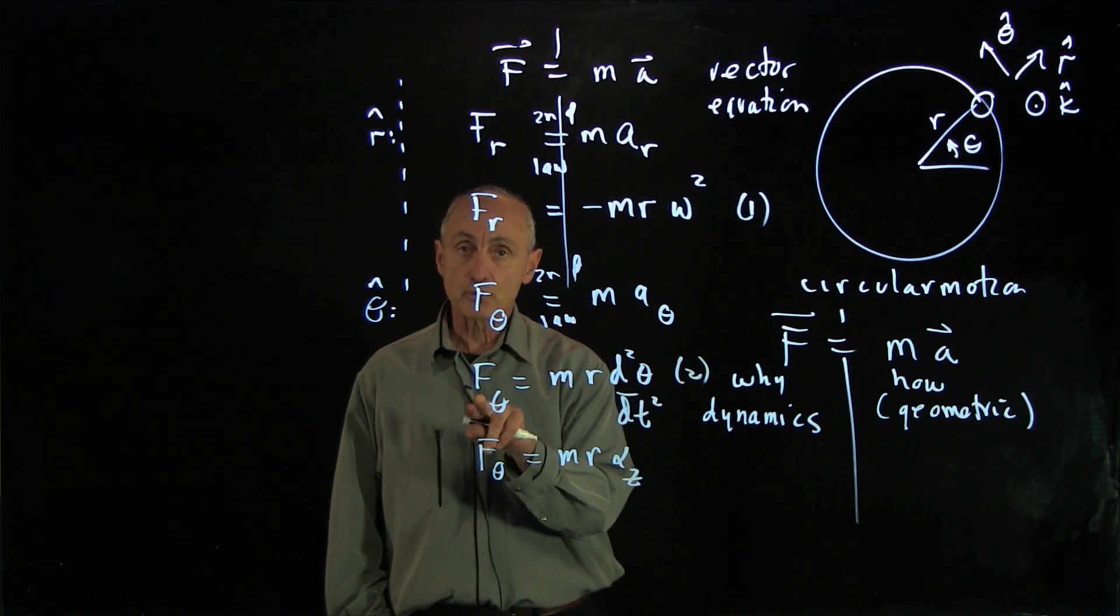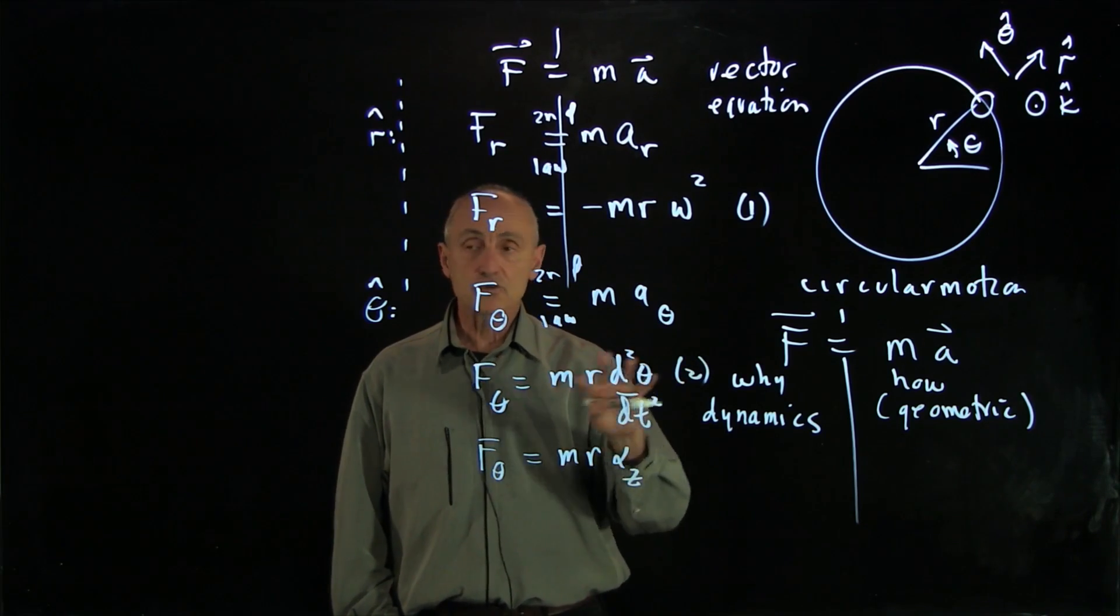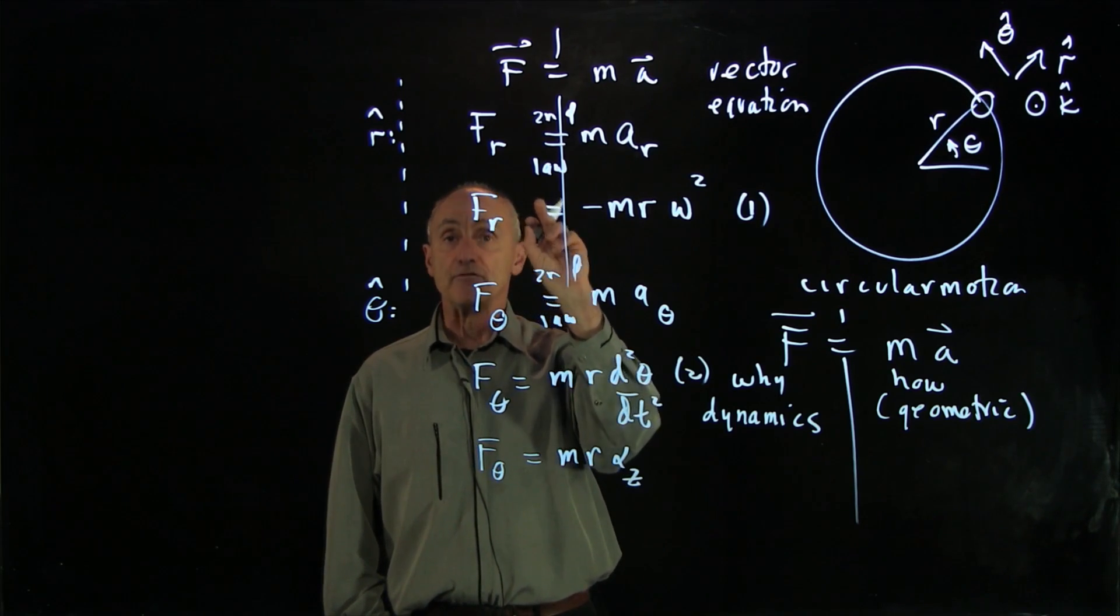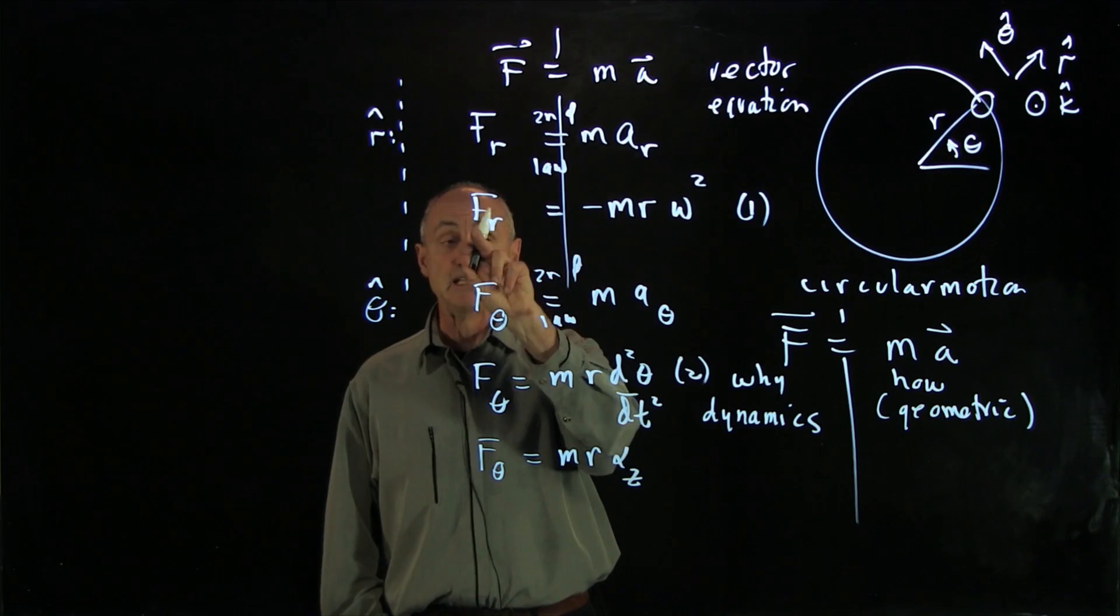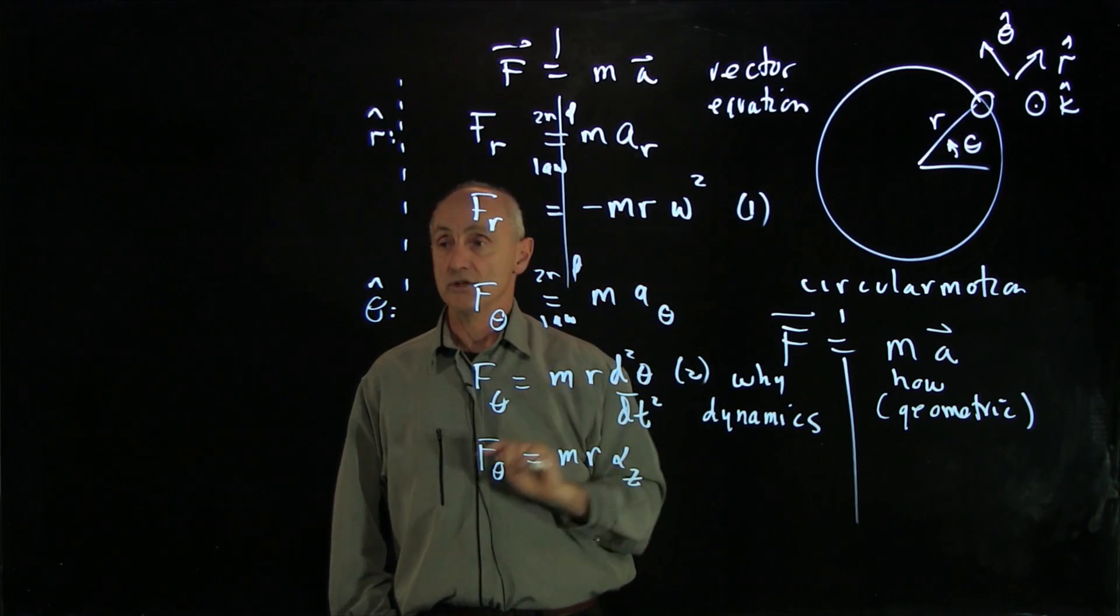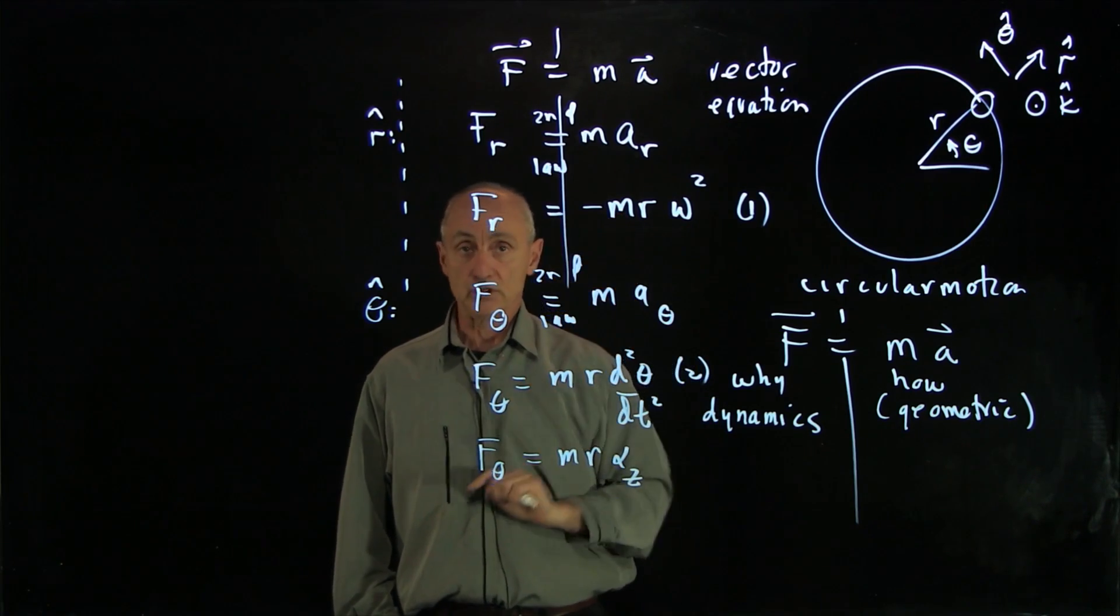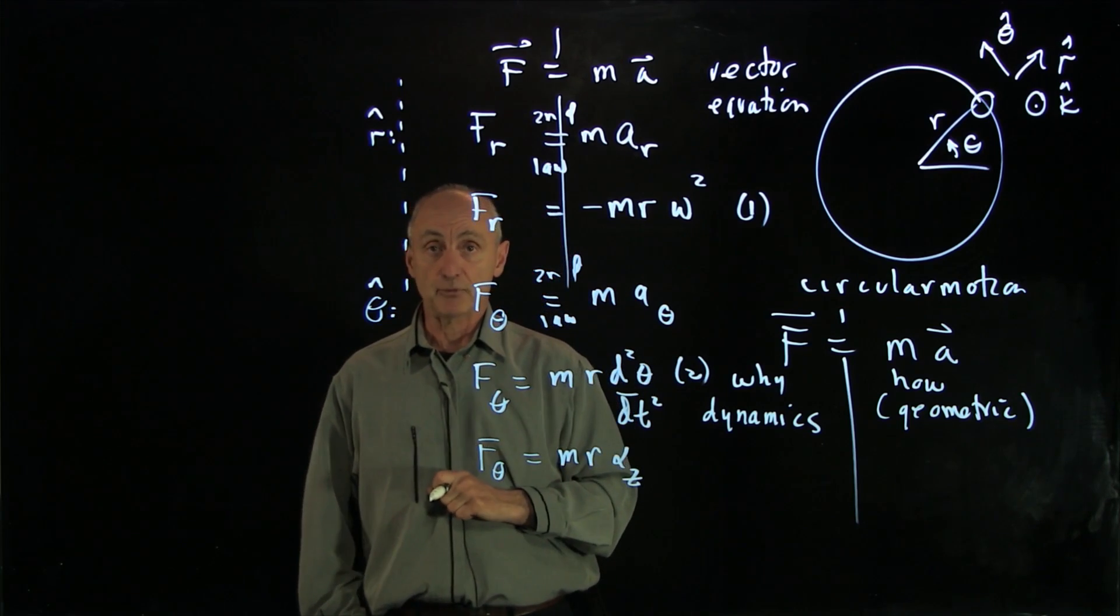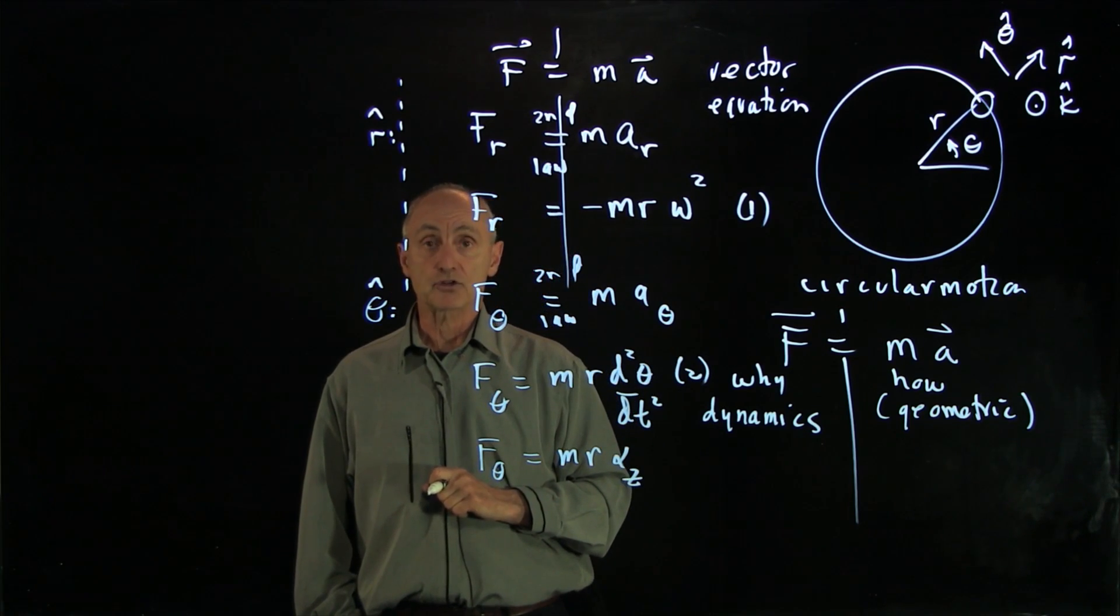If the tangential forces are 0, then there's no angular, there's no tangential acceleration. We know that for circular motion, the radial forces can never be 0 because this term is always non-zero and points radially inward. And now we'll look at a variety of examples applying Newton's second law to circular motion.